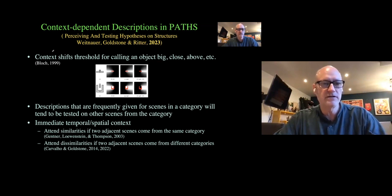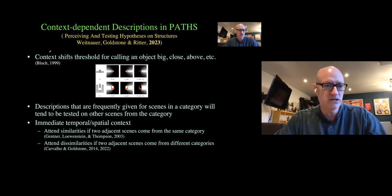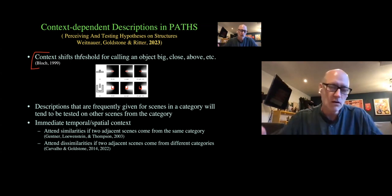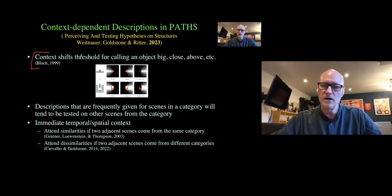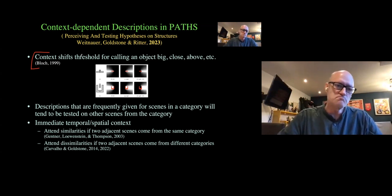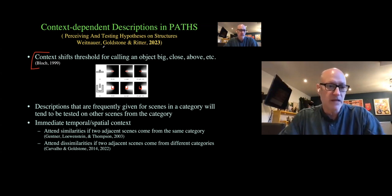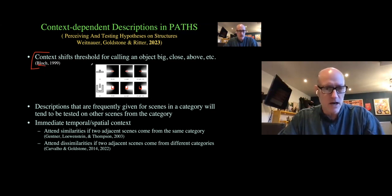Of critical importance for PATHS is that it develops context-dependent descriptions. There are three kinds I want to point out. One is context-dependent shifts in the threshold for calling an object big, close, above, or right of. These are fuzzy categories and fuzzy relations. We actually use a fuzzy logic developed by AI researcher Irene Bloch, which we modify.